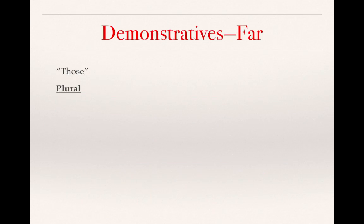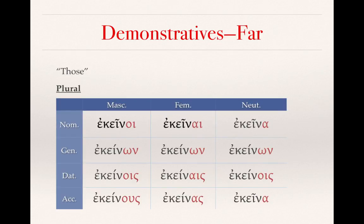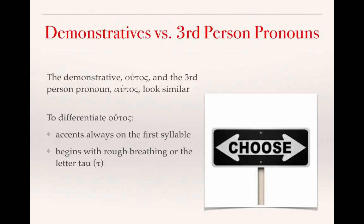Looking at the plural, the pattern is the same. We see the familiar endings — oi, ai, a; ōn, ōn, ōn; ois, ais, ois; ous, as, a — simply being added on to the stem ekein-.